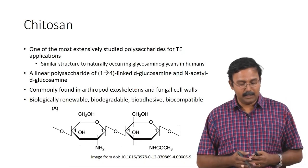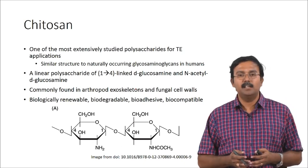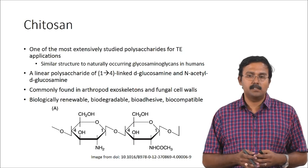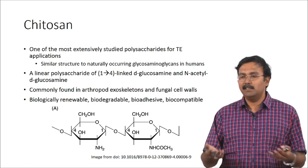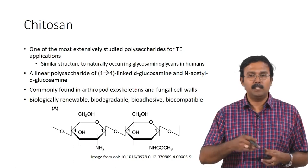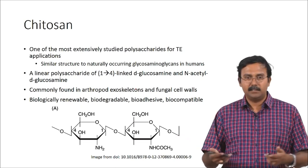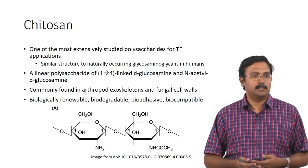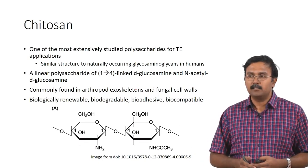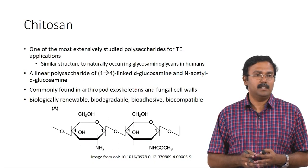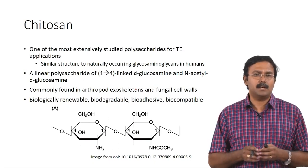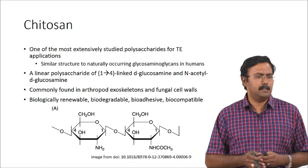Chitosan is not like that. Chitosan is actually found in arthropod exoskeletons and fungal cell walls. You can actually very easily get chitosan — all the shrimp shell which you throw away has chitosan. It has chitin, and chitin can be processed to get chitosan. Because of this, there is actually a lot of abundance when it comes to chitosan and it is actually reasonably inexpensive.